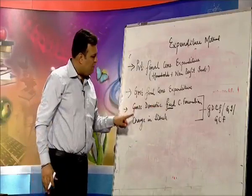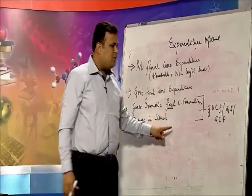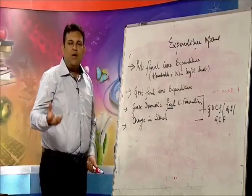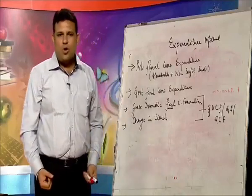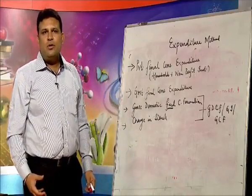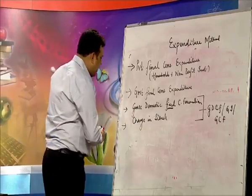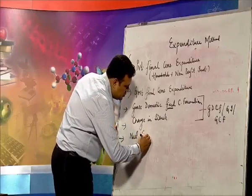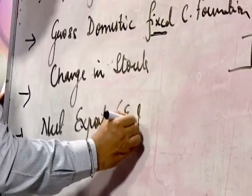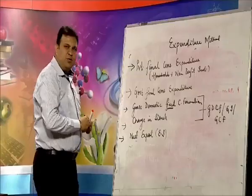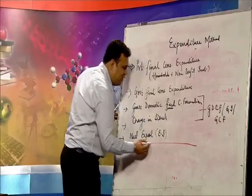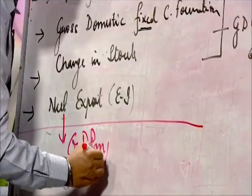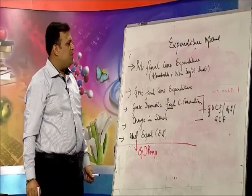If you have to take change in stock and fixed is not given, it is inclusive of change in stock. We have expenditure on retaining stock of raw material, semi-finished goods, and livestock. At the last we have net exports — net export is export minus import. If we add all this, we get the value of GDP at MP.